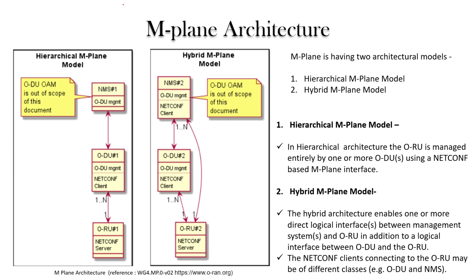Next, let's discuss the M-plane architecture. There are two types: the hierarchical M-plane model and the hybrid M-plane model. In the hierarchical model, the ORU is managed entirely by one or more ODUs using a NETCONF-based M-plane interface. When the RU comes up, it performs a call-home to the NMS server — specifically to the NMS client, which can reside in the ODU or a separate node.